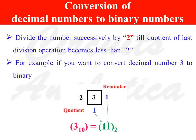Conversion of decimal numbers to binary numbers. To convert a decimal number to a binary number, divide the decimal number successively by 2, until the quotient of the last division operation becomes less than 2. For example, to convert the decimal number 3 to binary, divide 3 by 2. After the first division, we get a quotient of 1 and a remainder of 1. As the quotient is less than 2, no further division is needed. So the decimal number 3 is equal to 11 in the binary number system.